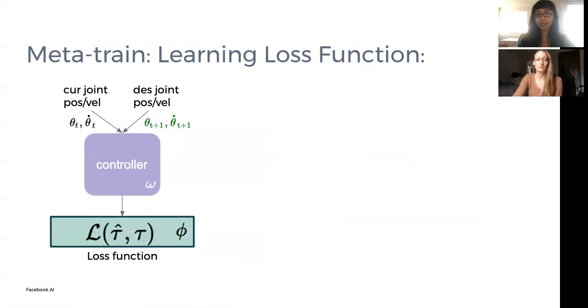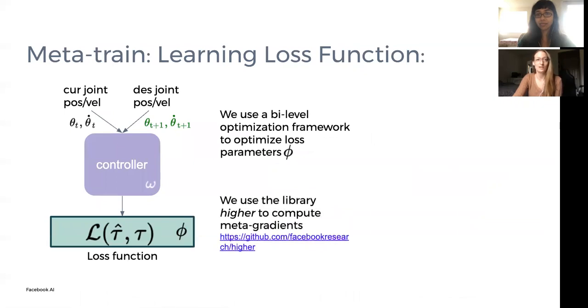We first train a loss function with parameters phi using a bi-level optimization framework. We use the library Higher to compute the meta-gradients and update phi. This training is performed on data collected with the real KUKA arm, moving in a trajectory where the joint angles follow a sine motion. This data is collected at various frequencies between 0.02 and 0.08.